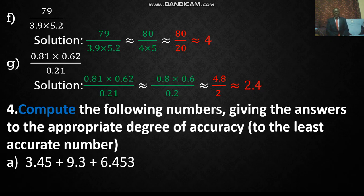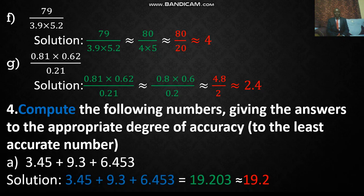Example 4: Compute the following numbers. Give the answers to the appropriate degree of accuracy. So when it comes to addition and subtraction, you look at the one that is least accurate. In this case 9.2 to one decimal place, so the answer will be to one decimal place. So when you add the numbers you get 19.203, which is estimated to be 19.2.